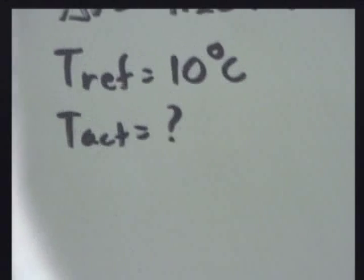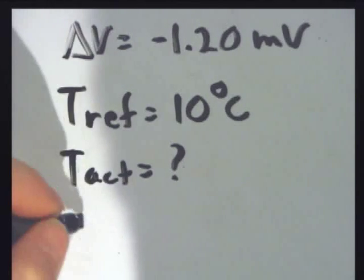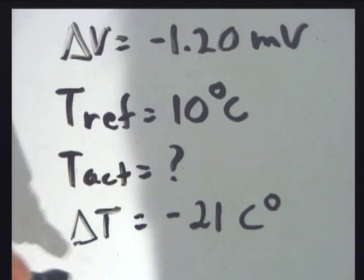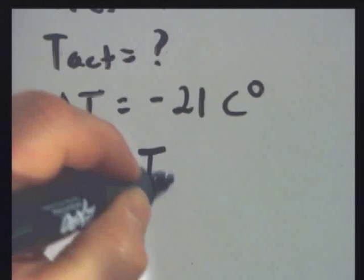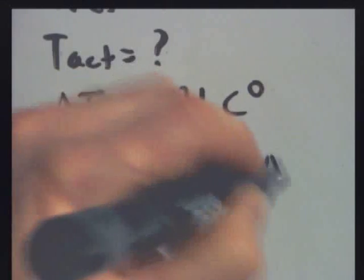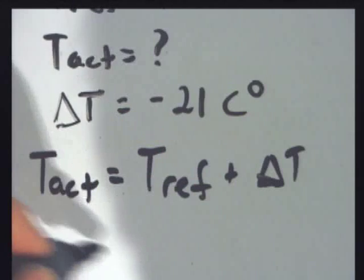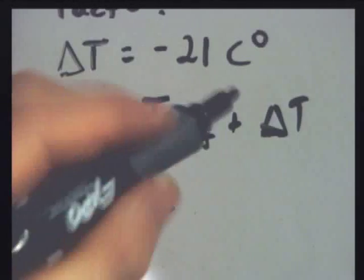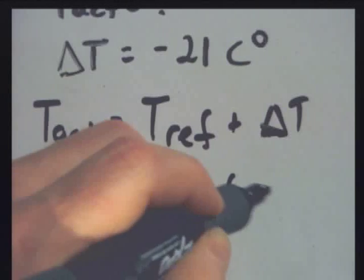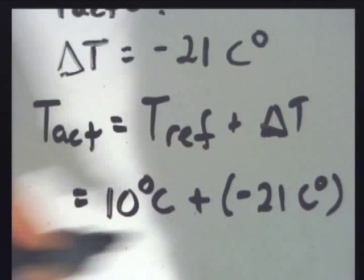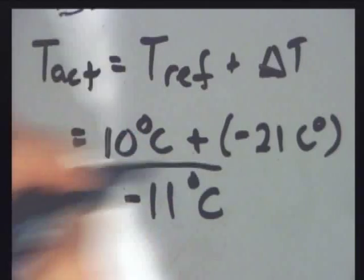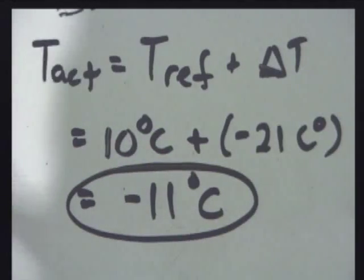So I'll write delta T equals minus 21 Celsius degrees. And my actual temperature is equal to my reference temperature plus my temperature difference, which is 10 degrees Celsius, that was my reference temperature that I picked, plus minus 21 Celsius degrees. That gives me an actual temperature of minus 11 degrees Celsius. And that's how you use a thermocouple.